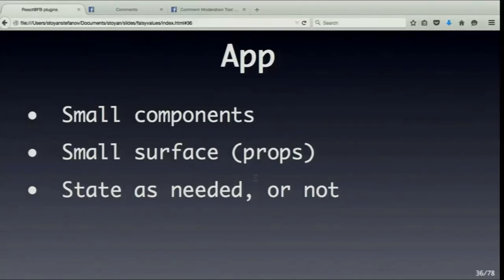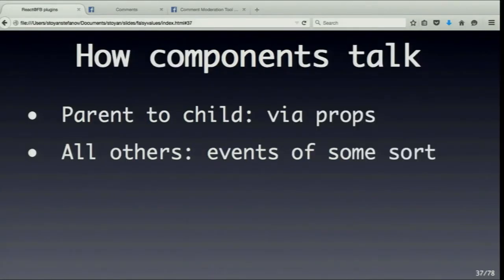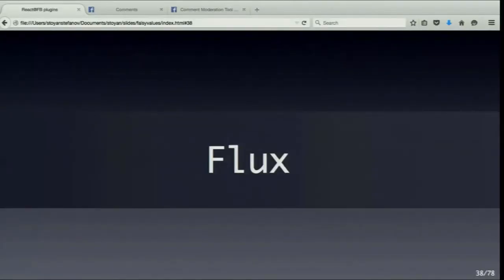When you design an app, you want to divide and conquer — split everything into small components. Expose as small a surface as you can; if a component takes 50 properties, it can probably be split further. Components communicate with each other: if it's parent to child, use properties. Otherwise you need some sort of event system — and that's where the idea of Flux comes in for managing your data flow.